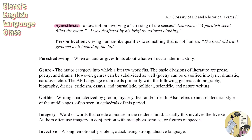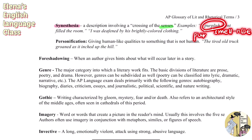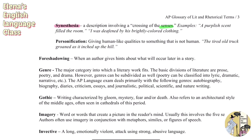The first of the last two is synesthesia, which is a description involving a crossing of the senses. You can memorize this by focusing on the word 'sense' within it. An example of synesthesia would be 'a purplish scent filled the room' — it's a smell sensed through your nose, but it's described as purple, a color you perceive with your eyes, so it's a crossing of the senses.